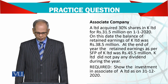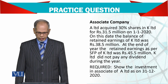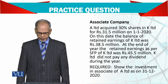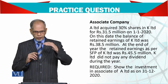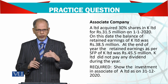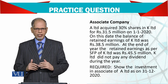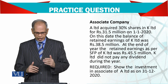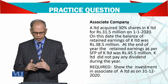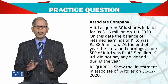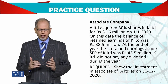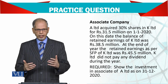At the end of the year, the retained earnings as per K Limited's balance sheet is 45.5 million. When we bought the shares, they had profits of 38.5 million, and now at the end of the year the balance is 45.5 million. So the increase in profit is 7 million, and your share of that is what gets recorded in the consolidated accounts.